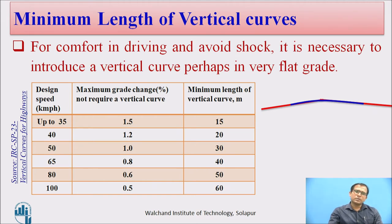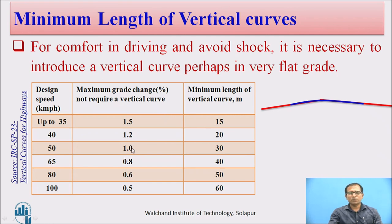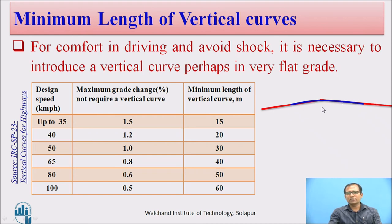For flat sections where two alignments are connected, leaving them without a curve creates kinks causing shocks and discomfort. A minimum curve length is required. According to codal provisions, depending on vehicle speed, the minimum length is 60 m with a maximum grade change of 0.5%. As the deviation angle decreases, the length of the curve increases.